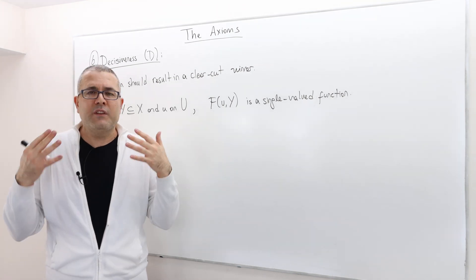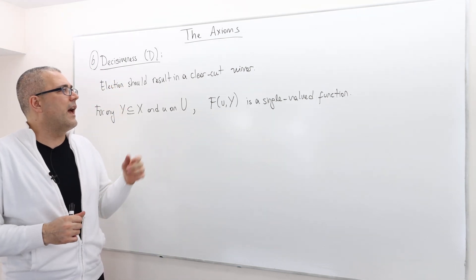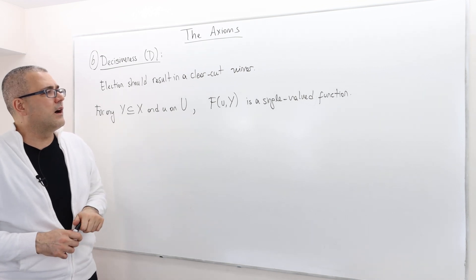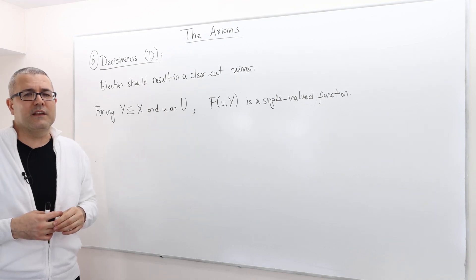So with some tie-breaking rules, we can actually modify some of the voting rules and make them single-valued. Again, decisiveness is a very mild assumption.